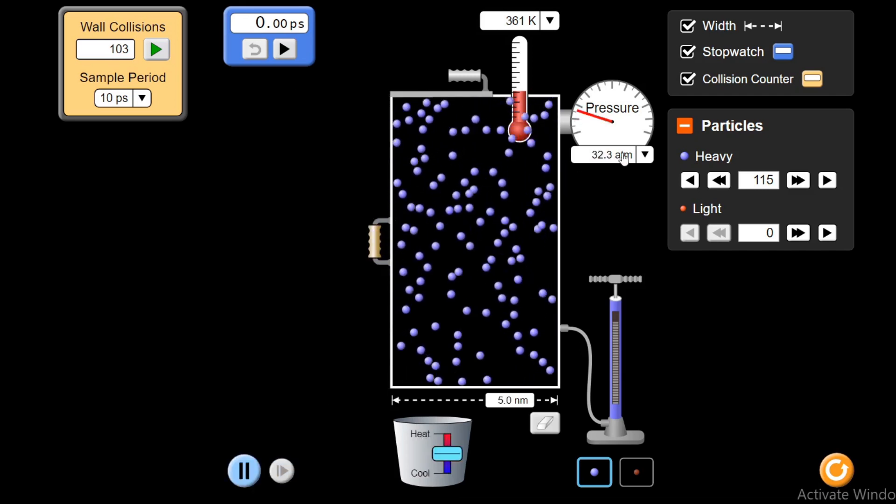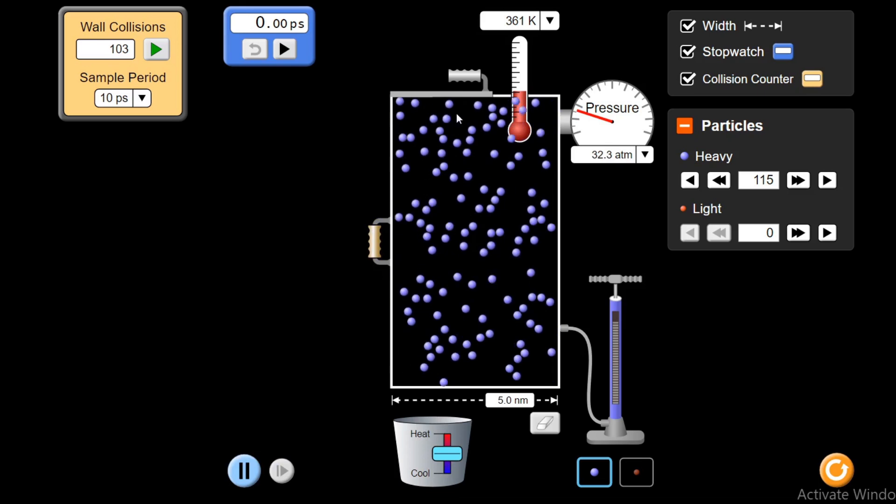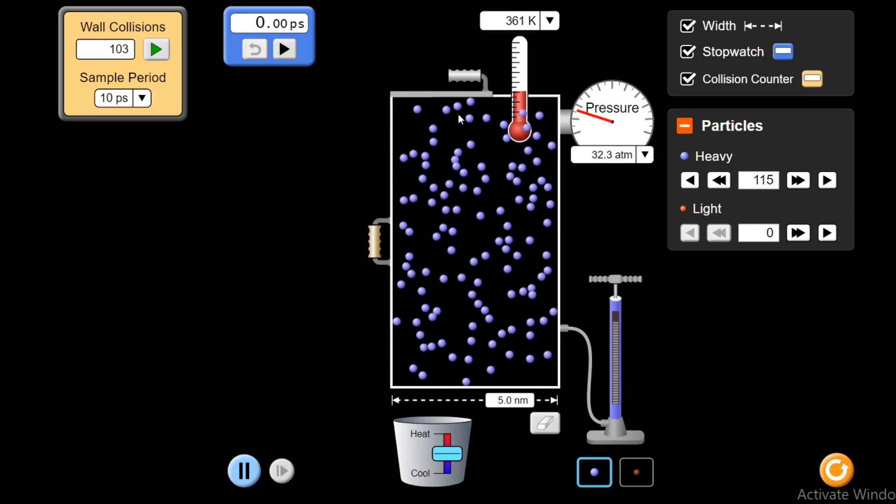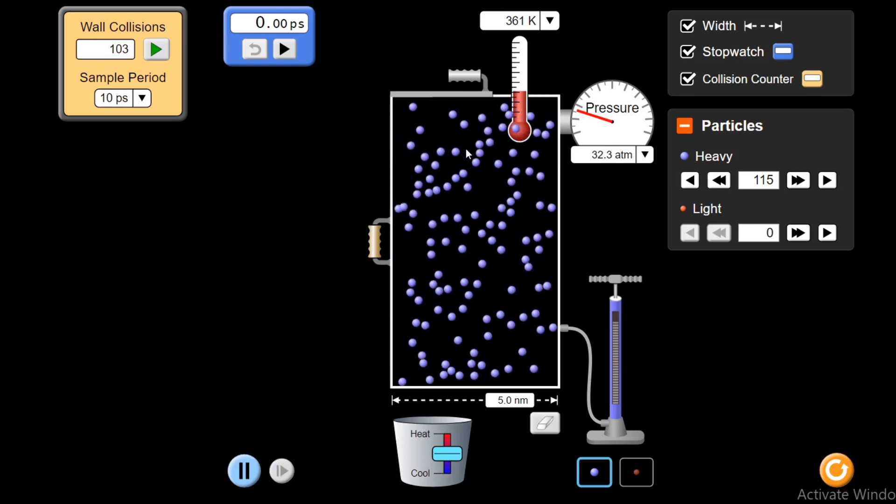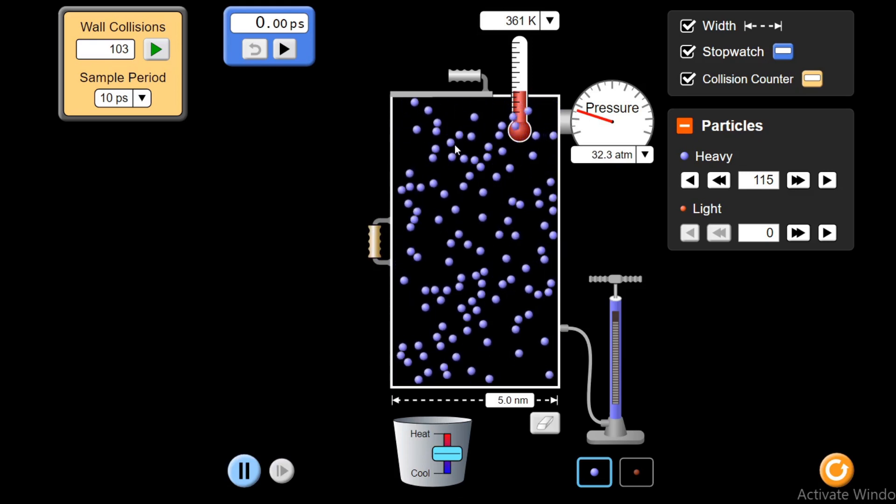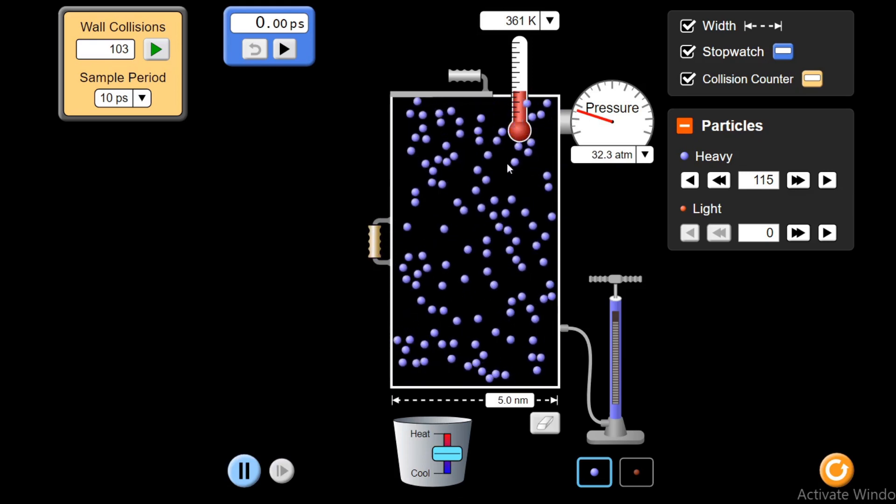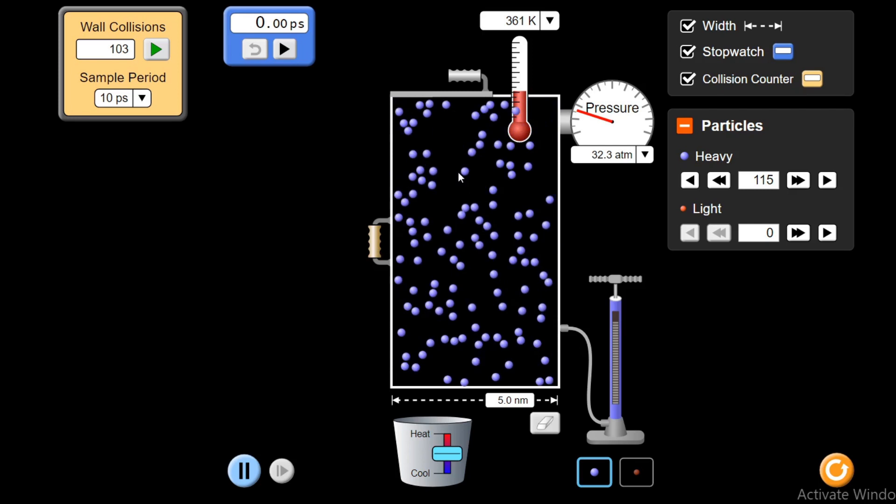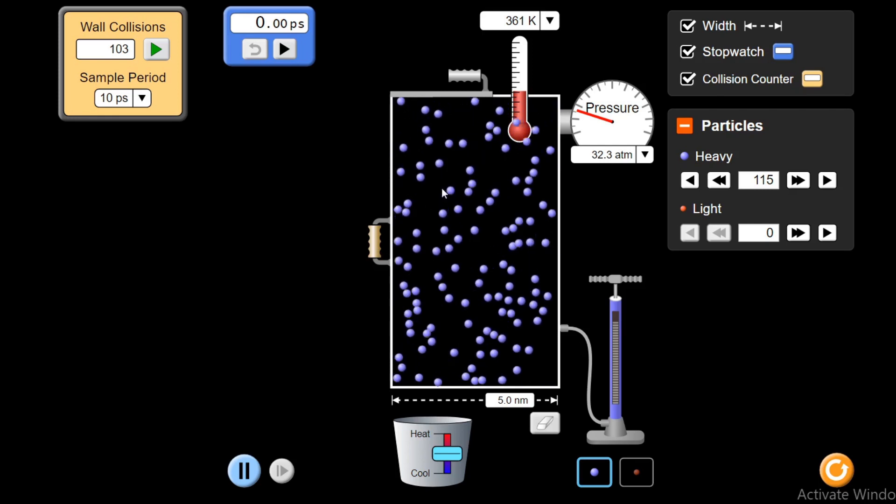Initially, area was more since pressure was force upon area. And they are getting less area since they are getting less space. So they are colliding with the walls of the container more frequently.